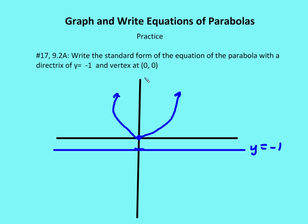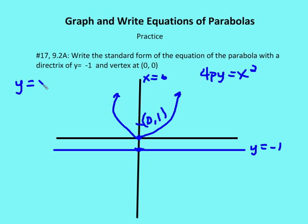I know my focus is going to be on the y-axis. The focus is equidistant from the vertex as the directrix — the directrix is one unit away from the vertex, so the focus is also one unit from the vertex, giving me the point (0, 1). The standard form of this equation is 4py is equal to x squared, since that represents a parabola that faces up, and p equals 1. So I end up with 4 times 1 times y is equal to x squared, or 4y is equal to x squared.